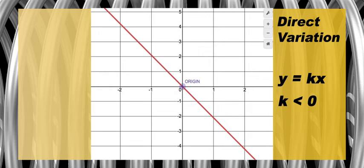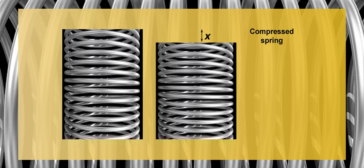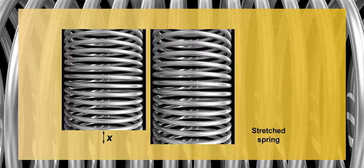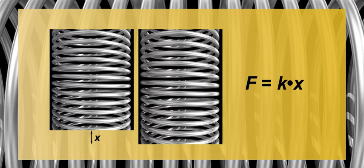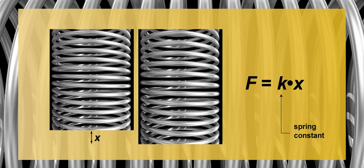Direct variations can be used to model many real-world phenomena. For example, pushing or pulling a spring a certain distance is a way to measure the force on it. The equation f equals kx is used to measure force on the spring based on how much it is stretched or compressed. The value k is called the spring constant.